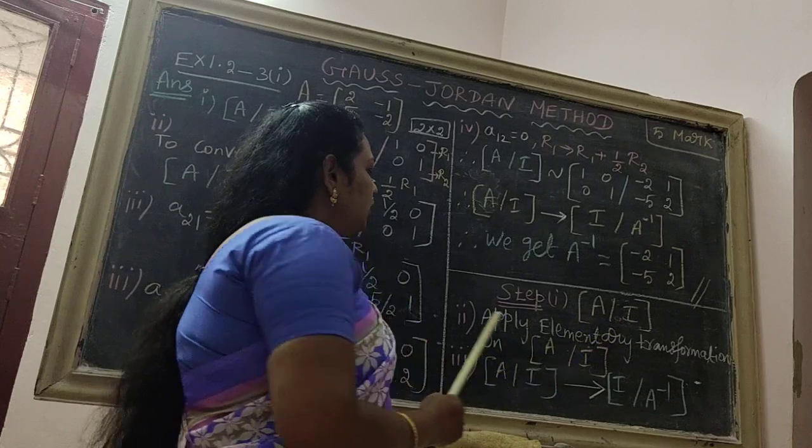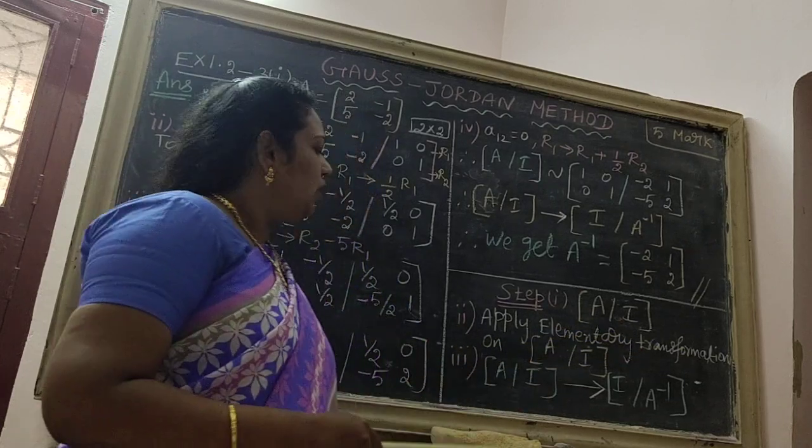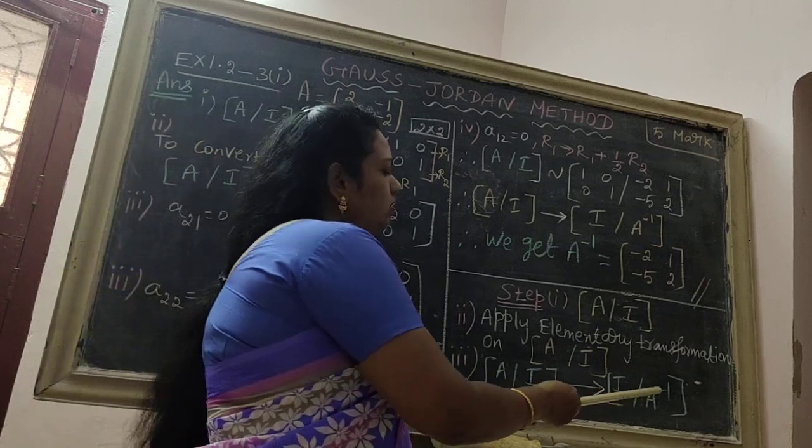There are 3 steps. Step 1, A bar i. Step 2, apply elementary transformation on A bar i. Finally we get A bar i tends to I bar A inverse.